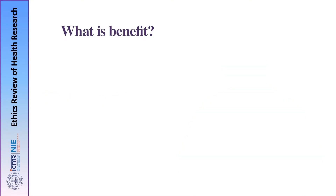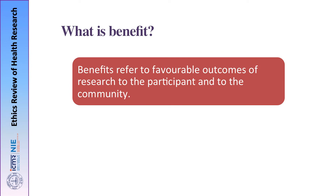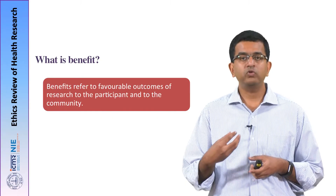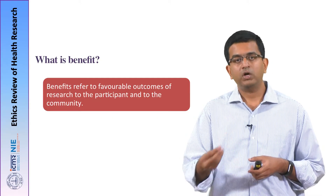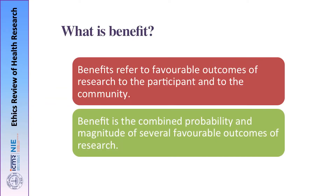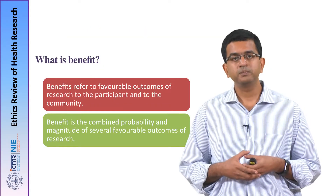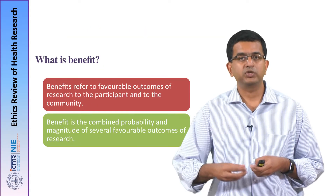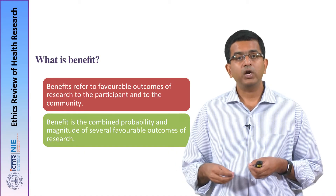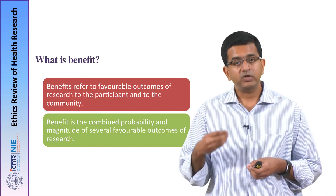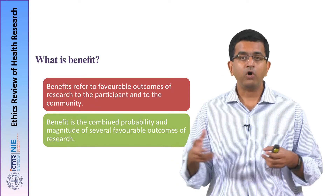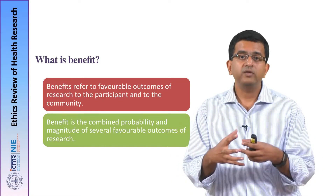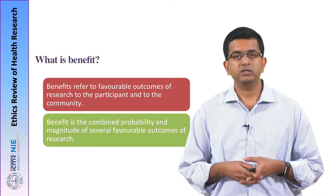After understanding what is risk, we should also understand what is benefit. Benefit refers to the favorable outcomes of participating in a research project. This favorable outcome may be to the participant or to the community. Benefit is a combination of probability and magnitude of several favorable outcomes together. For example, if by participating in a research there is discovery of a new drug that prevents diabetes and reduces morbidity, all these probabilities of benefits cumulatively comprise the benefit of participation in the research project.